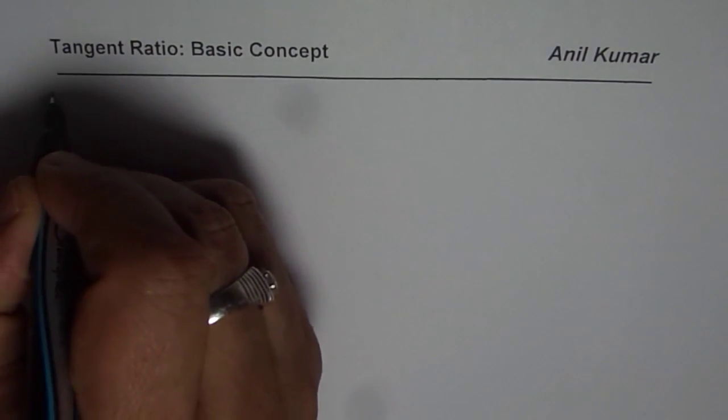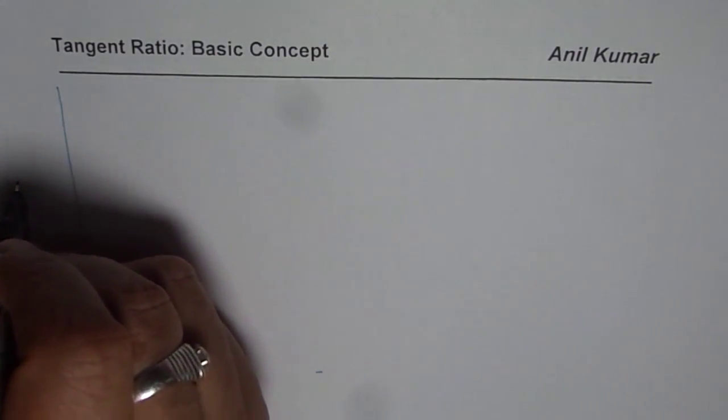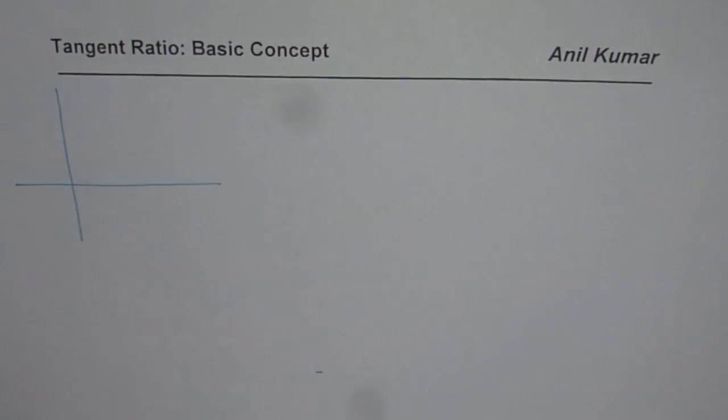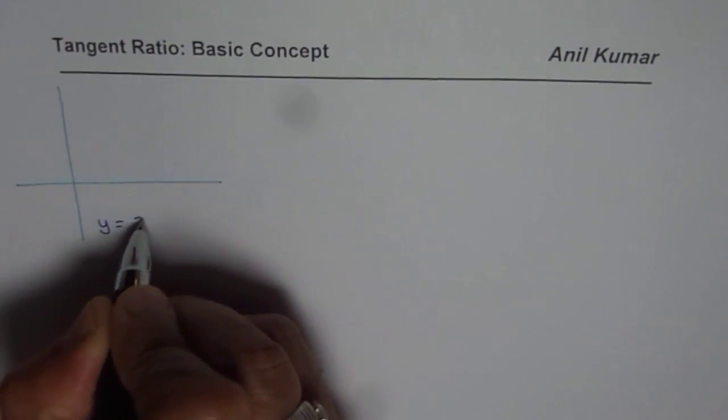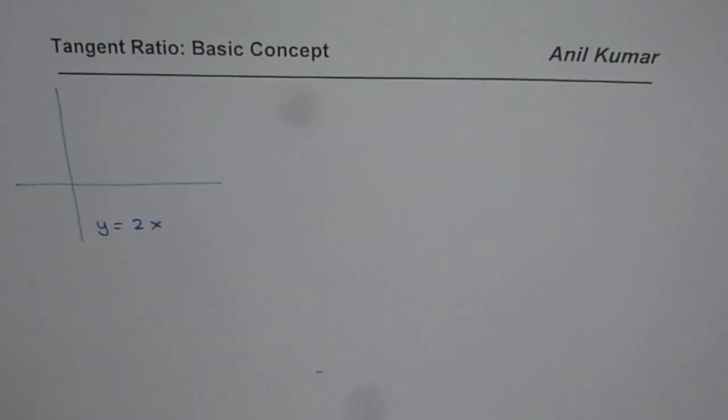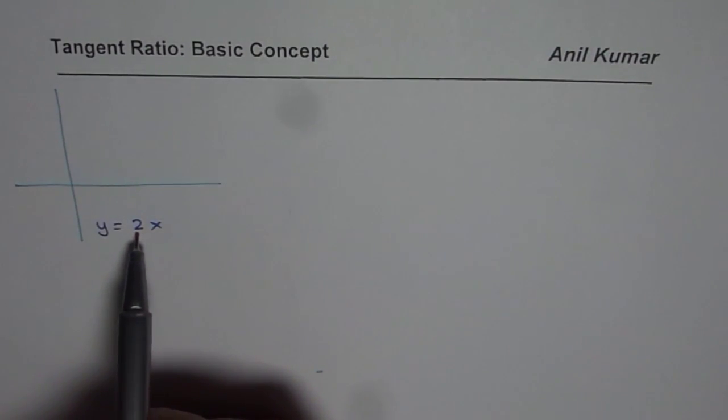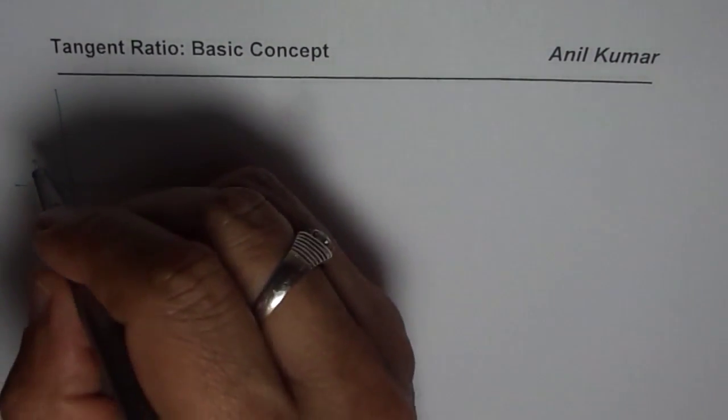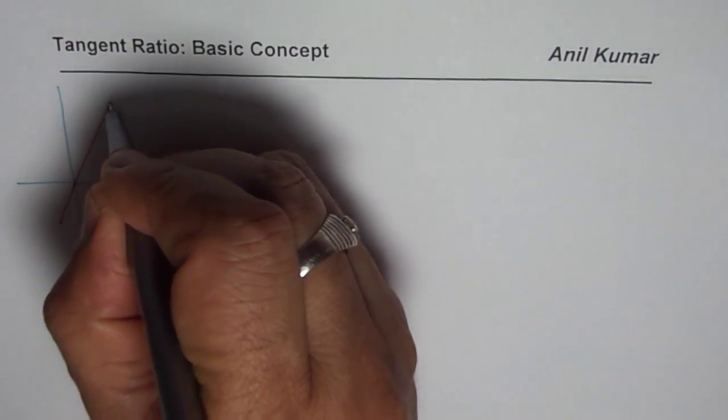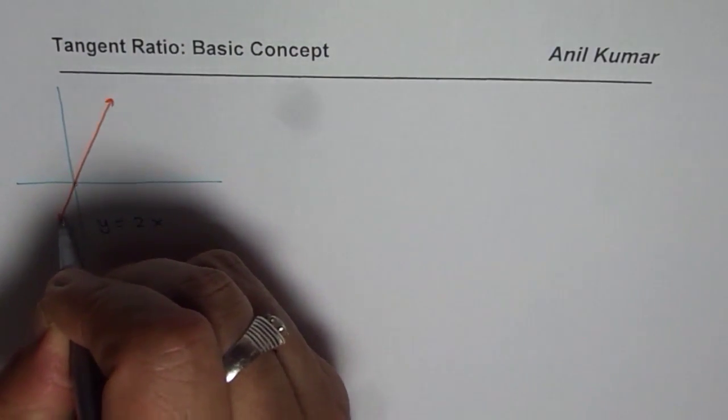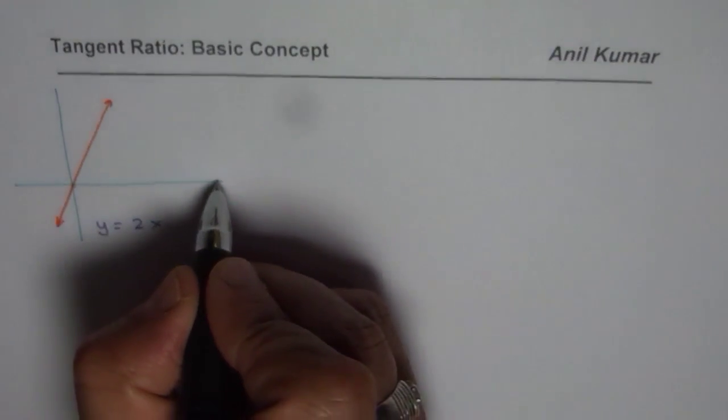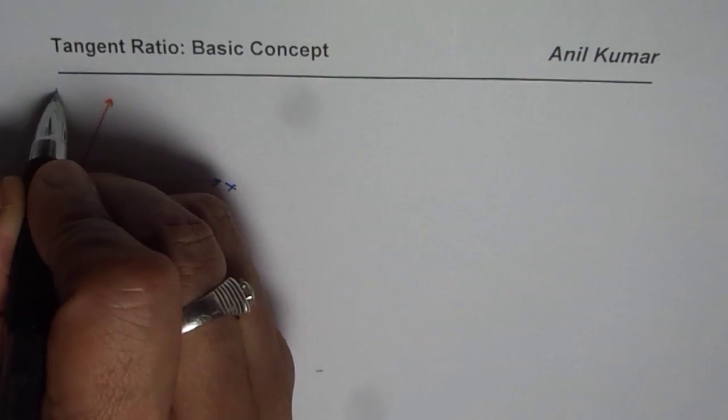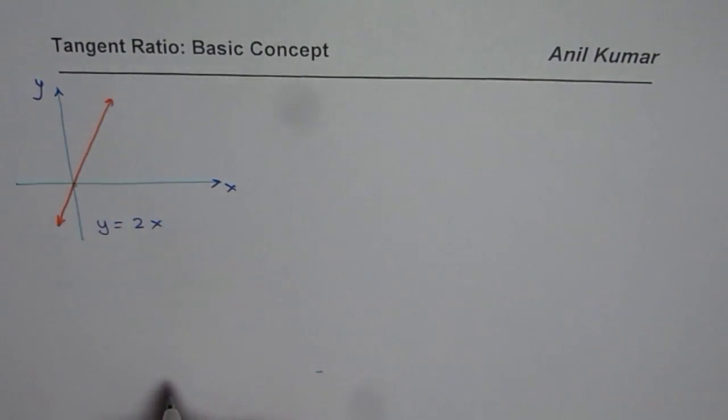You all know that in straight lines, if I have an equation say y equals to 2x, let me take a very simple example, it really means that there is a line which has a slope of 2. It passes through the origin. So it is kind of a line like this. So this line for example is representing y equals to 2x where horizontal axis is x, vertical axis is y.